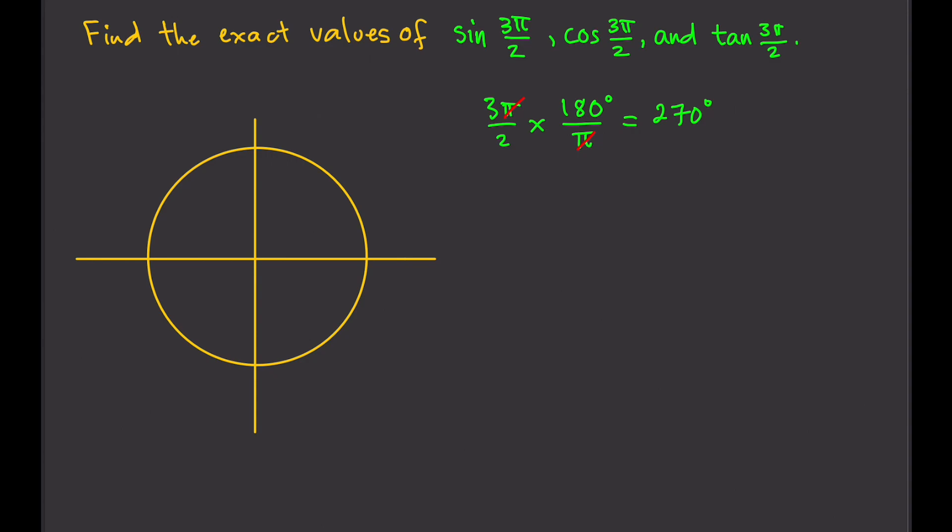So we can just say we're looking at the exact values of sine 270, cosine 270, and tangent 270. Let's do that, let's find 270.